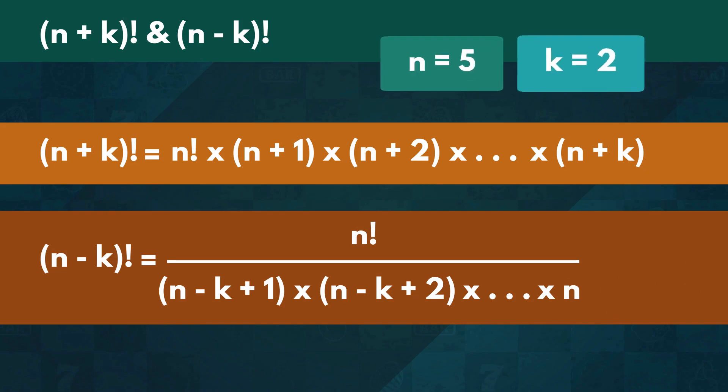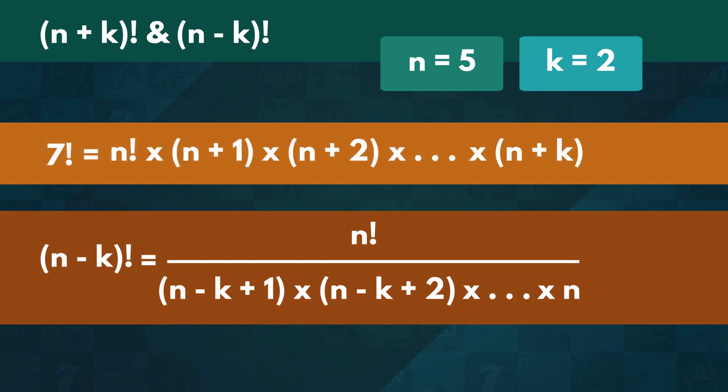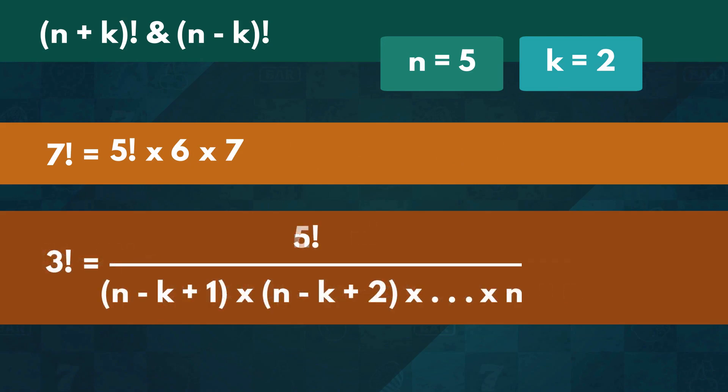For instance, if n is 5 and k is 2, then 5 plus 2 factorial equals 7 factorial or 5 factorial times 6 times 7 and also 5 minus 2 factorial equals 3 factorial or 5 factorial over 4 times 5.